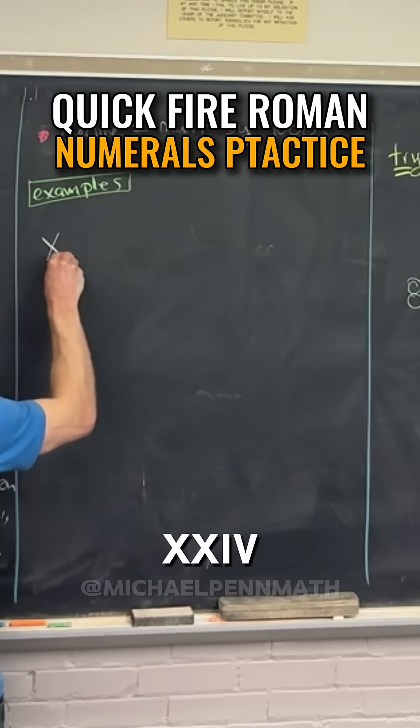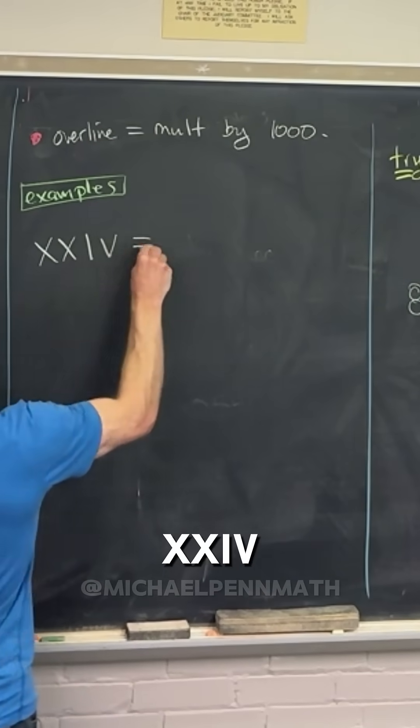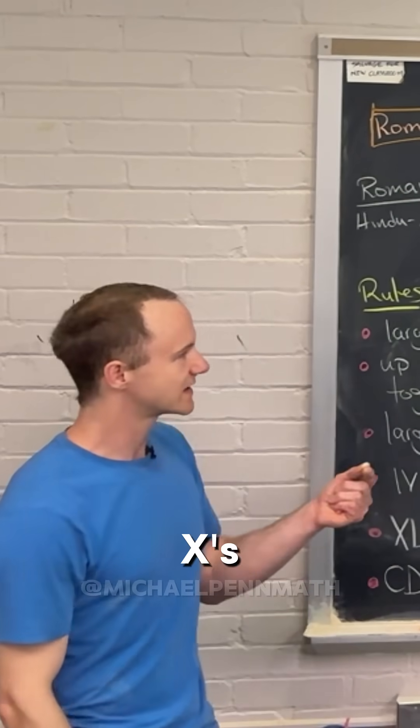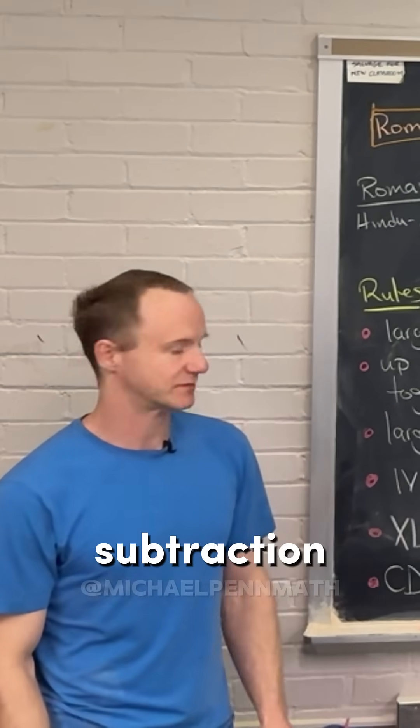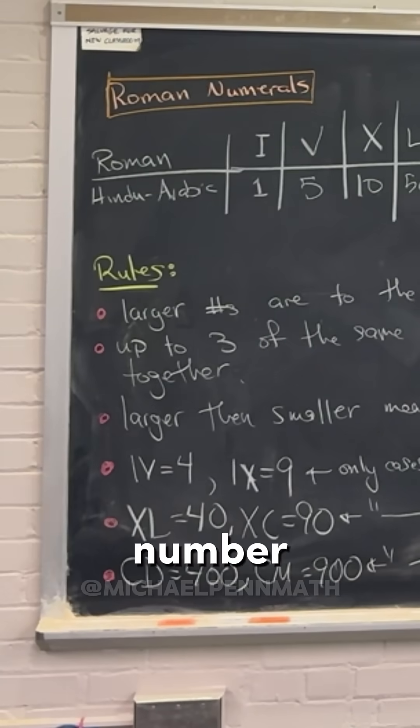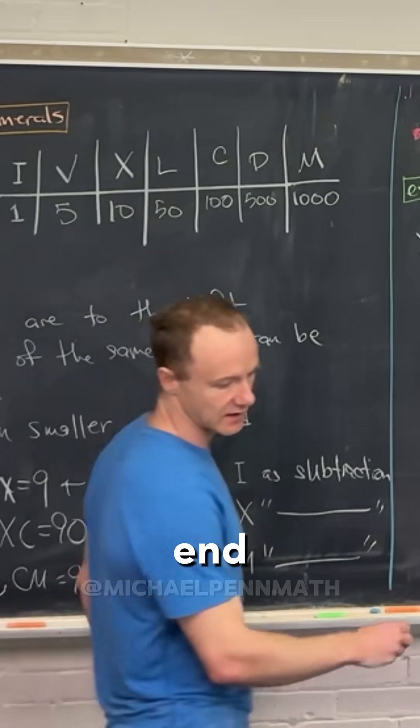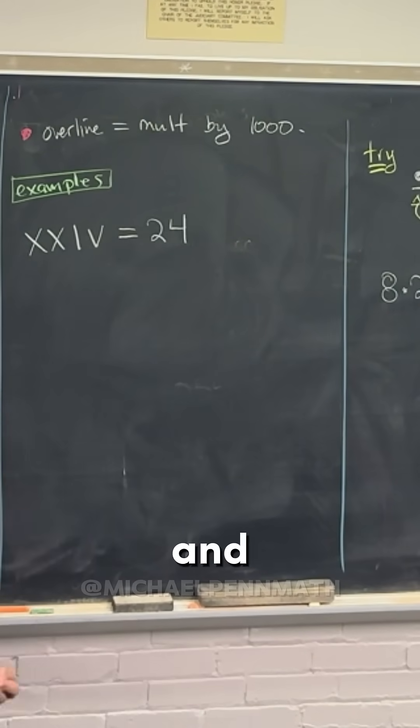So let's look at XXIV. This is going to be the two X's make a 20, and then we've got a five and then a one before it, so that means subtraction. Or you can think about this as a single number, so that would be 24 in the end.